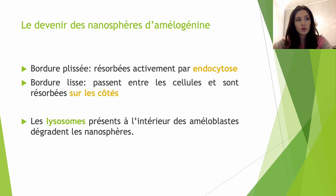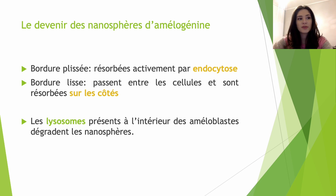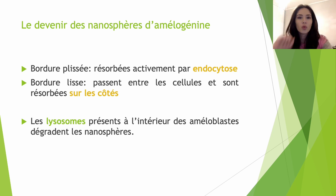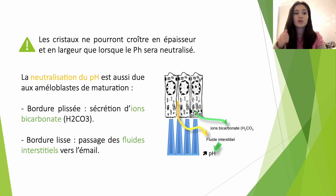Au niveau de la bordure plissée, les nanosphères vont être résorbées activement par endocytose. Au niveau de la bordure lisse, elles vont quitter l'émail et passer entre les cellules pour être absorbées sur les côtés des améloblastes. La dégradation protéique est donc terminée dans les améloblastes à bordure lisse ou plissée, qui contiennent tous les deux beaucoup de lysosomes — comparables à des estomacs de la cellule qui vont digérer les protéines. Cependant, l'élimination rapide des agrégats d'amélogénine va libérer les cristaux, mais ces derniers ne pourront croître en épaisseur et en largeur seulement lorsque le pH sera neutralisé.